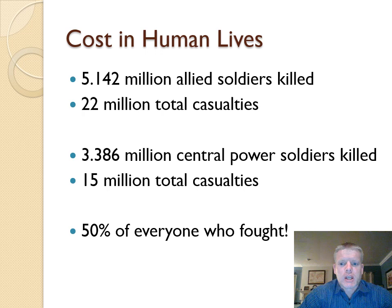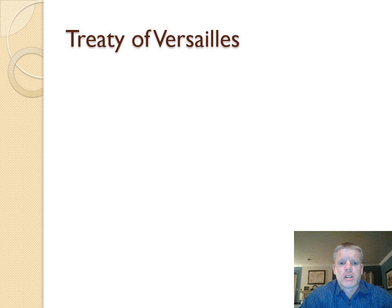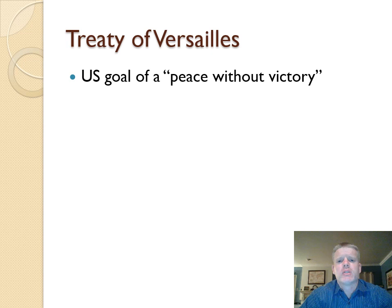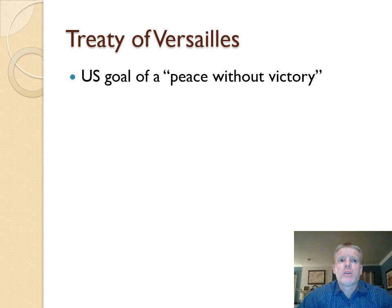When it comes to the Treaty of Versailles, total casualties stand at 22 million on the Allied side and 15 million on the Central Powers side — 50% of everyone who fought. People go into the Treaty of Versailles feeling pretty fired up. The US goal is 'peace without victory' — Wilson's motto. He wants to be a good winner: establish peace throughout the world without burdening a specific country as the loser and the one to blame.